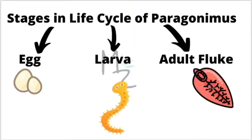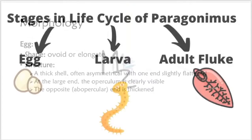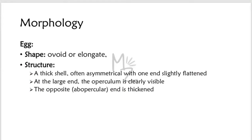The life cycle of Paragonimus has three stages. The first is the egg, then comes the larva, which is further classified into different stages on the basis of its morphology and the sites it infects and travels through. The third stage in the life cycle of any Trematode is the adult fluke. Let's talk about their morphology, starting with the egg, then the larvae, then the adult fluke.